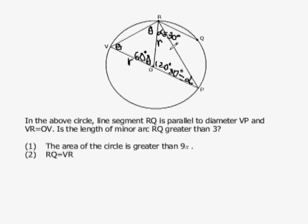Because we have parallel lines VP and RQ, I know that angle OPR is equal to angle PRQ. So this is another 30 degree angle here, so all of this is 30 plus 30, 60 degrees.